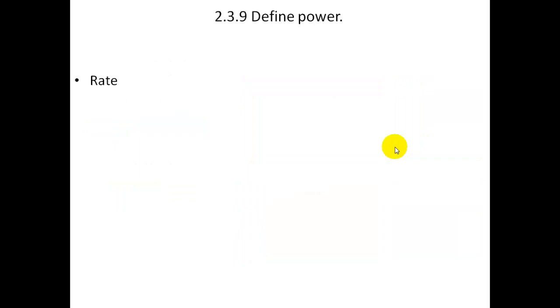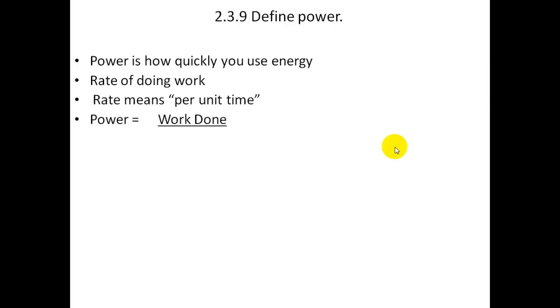Define power. The power is the rate of doing work. In other words, it is how quickly you use up energy. Rate means per unit time. So it is work done divided by time taken. For example, if you do 10 joules of work in 2 seconds, the power is going to be 10 joules divided by 2 seconds, which is 5 watts. The unit is watts.